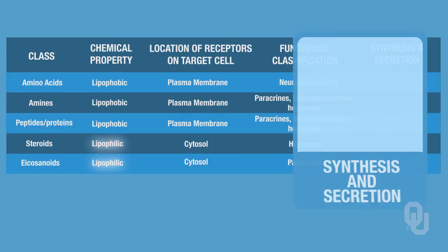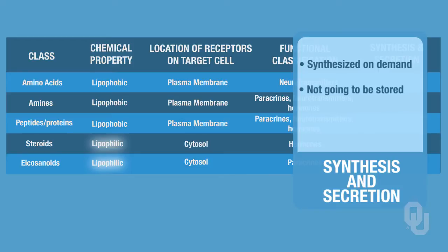If it's a lipophilic ligand, it's synthesized on demand — in other words, when the body needs it, it's going to make it. If the body needs a steroid hormone, for example, it's going to make it on demand. When it's made on demand, it's not going to be stored, since it's made when it's needed. The release rate is dependent upon the synthesis rate — the faster it's synthesized, the faster it's released.